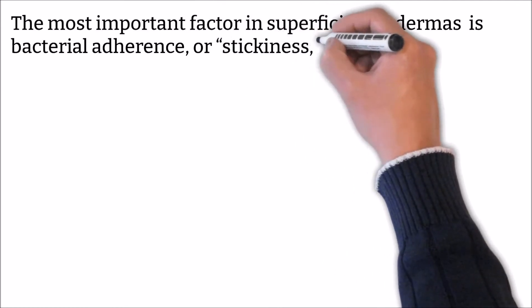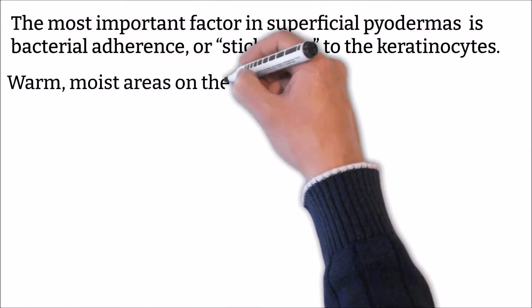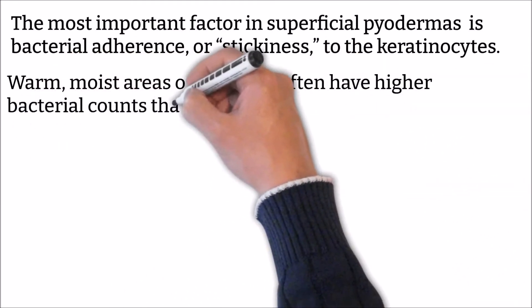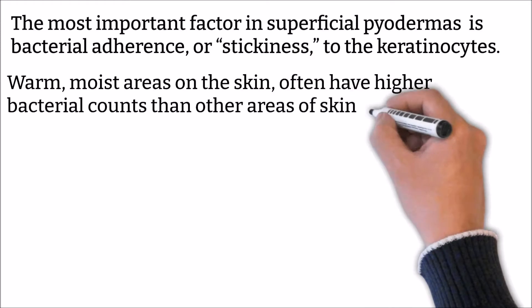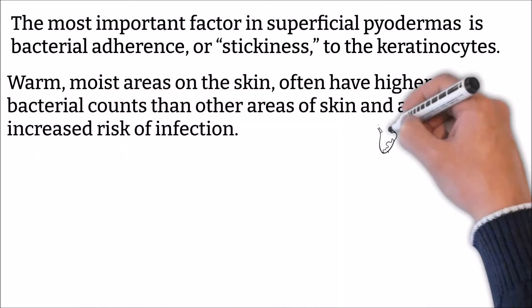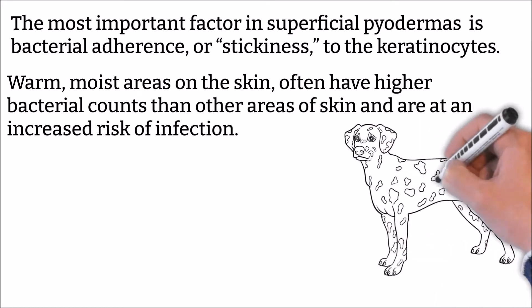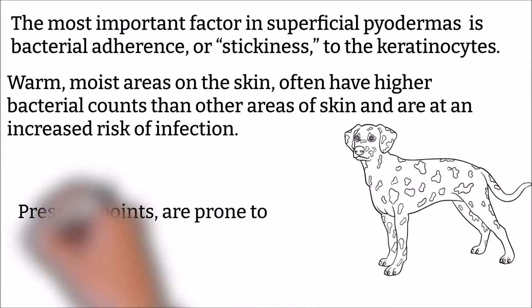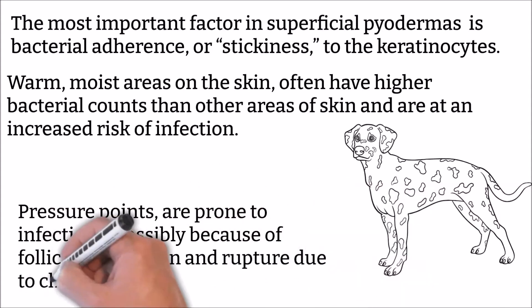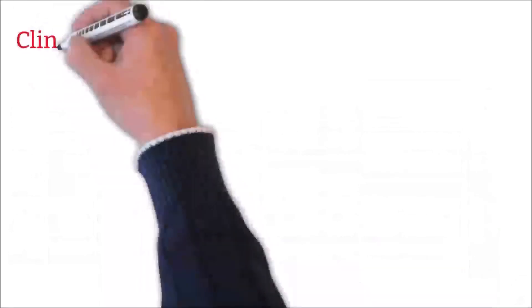The most important factor in superficial pyoderma that allows bacteria to colonize the skin's surface is bacterial adherence, or stickiness, to the keratinocytes. Warm, moist areas such as lip folds, facial folds, neck folds, axillary areas, dorsal or plantar interdigital areas, vulvar folds, and tail folds often have higher bacterial counts and are at increased risk of infection. Pressure points such as elbows and hocks are prone to infections, possibly due to follicular irritation and rupture from chronic repeated pressure.